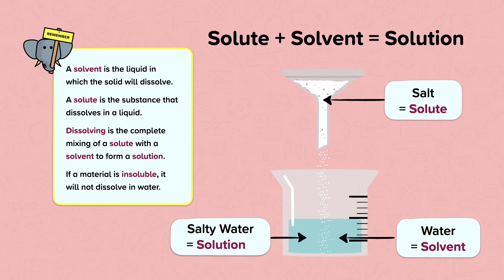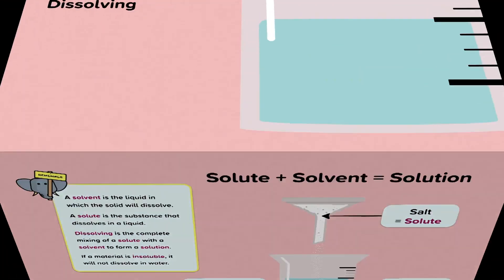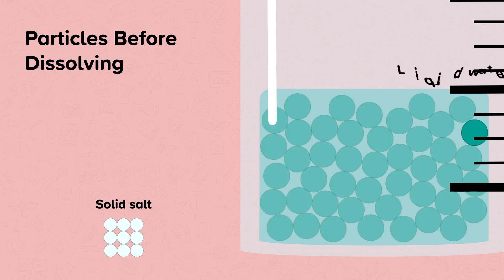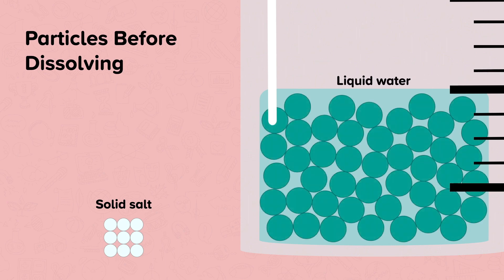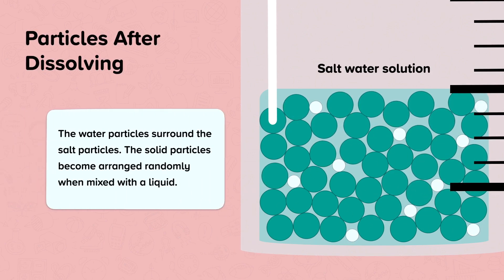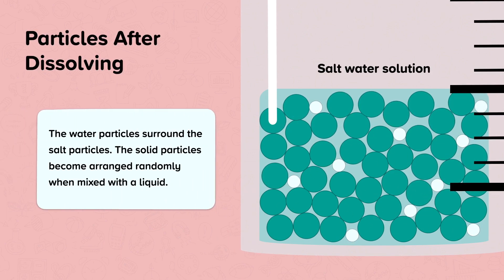If a material is insoluble it will not dissolve in water. If we look a bit closer, we can see that the solid salt particles, before they are added to the water, are highly ordered and closely packed together. The liquid water particles are randomly ordered and can move around each other. When the solute salt is added to the solvent water, the water particles surround the salt particles. The solid particles become arranged randomly when mixed with a liquid.